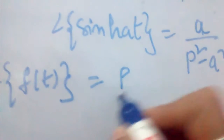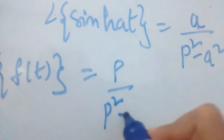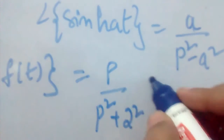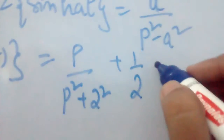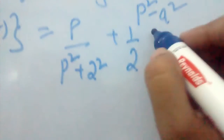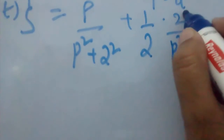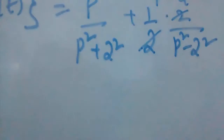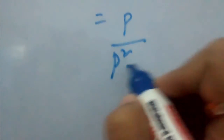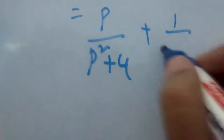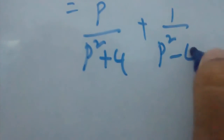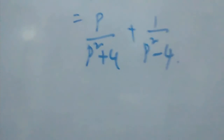Applying the formulas, L{f(t)} = p / (p² + 2²) + ½ · (2 / (p² - 2²)). The 2 in the numerator and the ½ cancel each other. We are left with p / (p² + 4) + 1 / (p² - 4). We consider these two terms as our f(p).